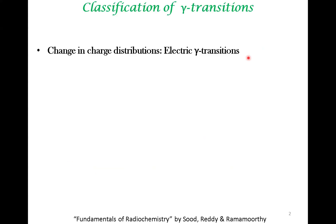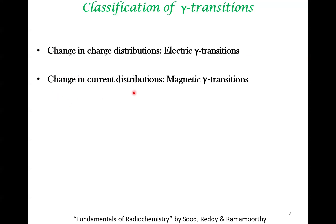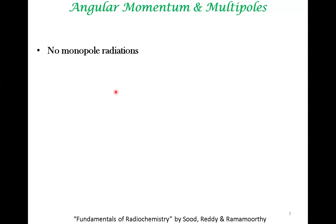There are two ways to classify gamma transitions, because of the fundamental reason for gamma transition. Whenever there is a change in charge distribution, the energy released will be via electric gamma transition. There can also be a change in current distribution, which gives rise to magnetic gamma transitions. These can be differentiated experimentally and have different fundamental origins. We always say there are only multipole radiations because there is no monopole radiation.